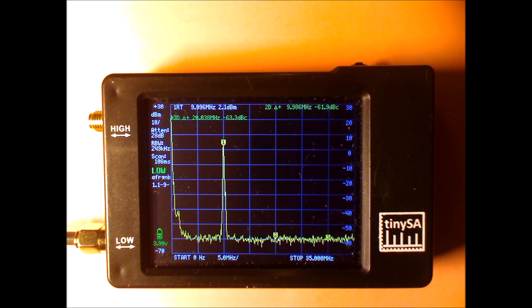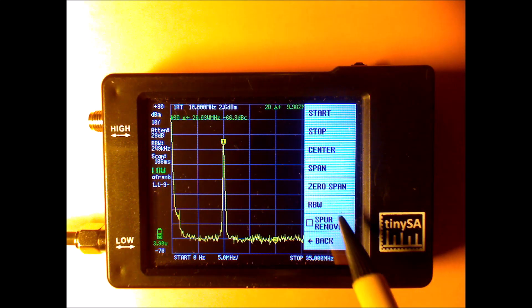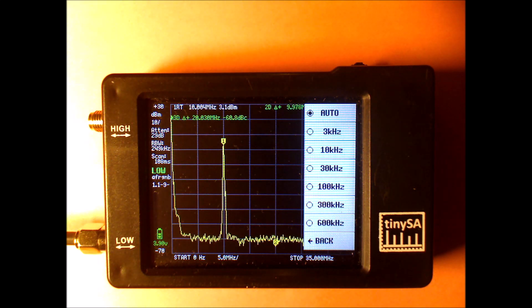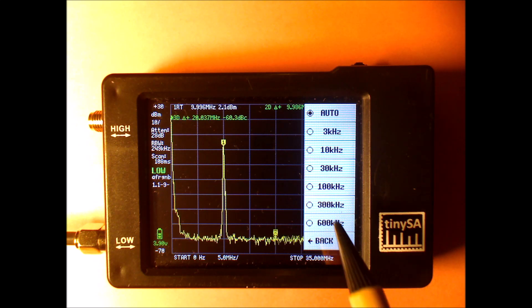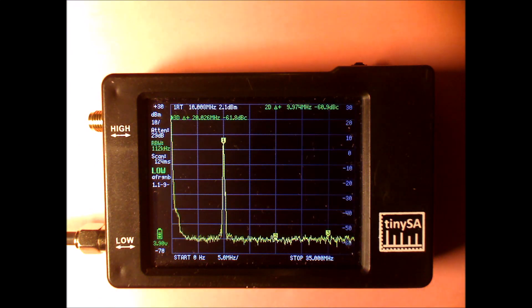It's important to look at the two delta markers. Delta marker 2 shows approximately minus 60 dBc, which means that the noise is at minus 60 dBc. And we will see if we can make that go down if we change the resolution bandwidth. Resolution bandwidth is currently in automatic setting at about 250 kHz bandwidth. So we're going to change that to 100 kHz.